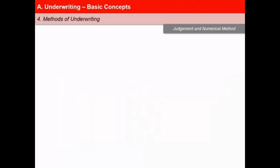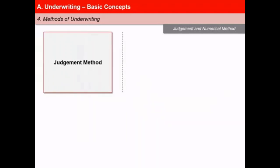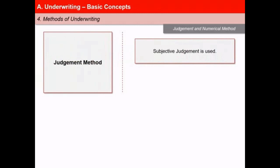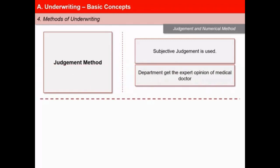Underwriters may use two types of methods. First is the judgment method, under which subjective judgment is used, especially when deciding on a complex case. In such situations, the department may get the expert opinion of a medical doctor, also known as a medical referee. For example, deciding whether to insure someone who has acute diabetes or not and on what terms.